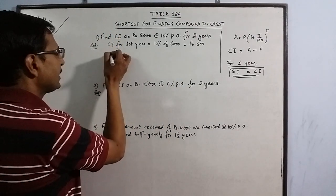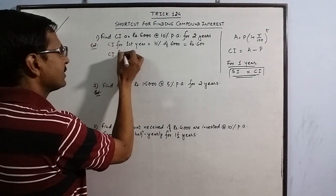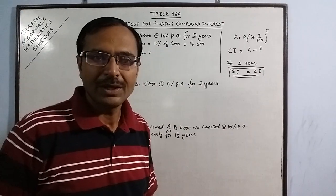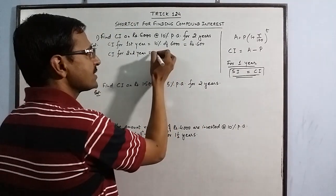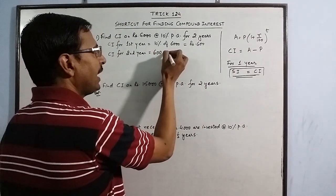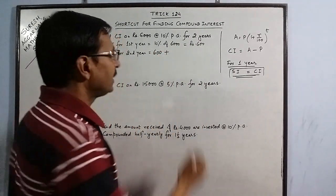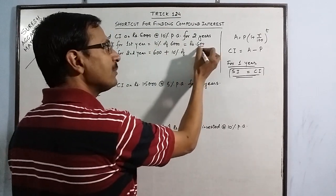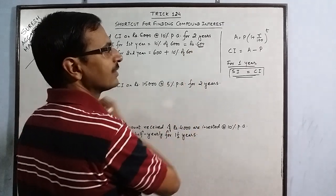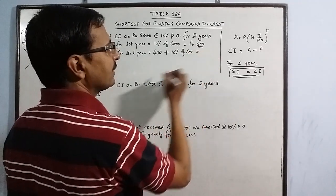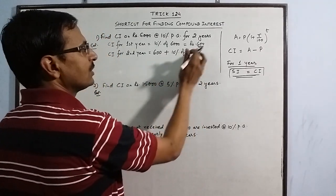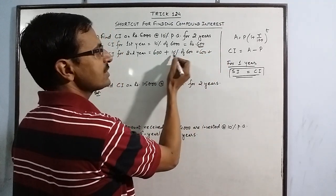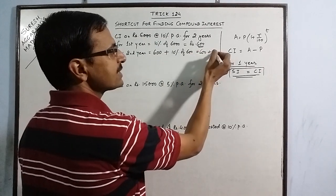Important thing is to calculate CI for second year. What you need to do here is, you just take this interest, 600 and add 10%, the same percentage of the same interest of the first year, you will get the interest for the second year. 600 plus 10% of 600, remove 1 zero, this is 60.